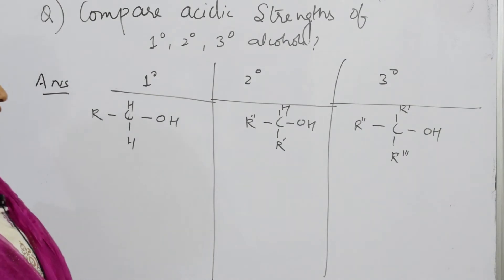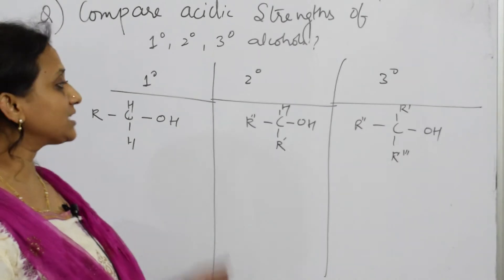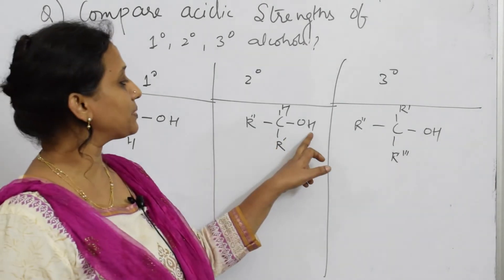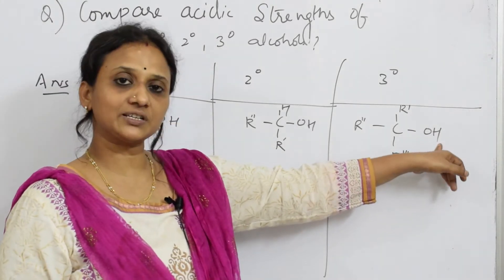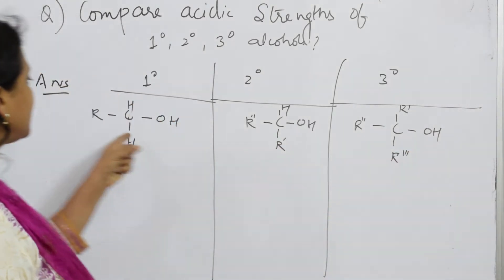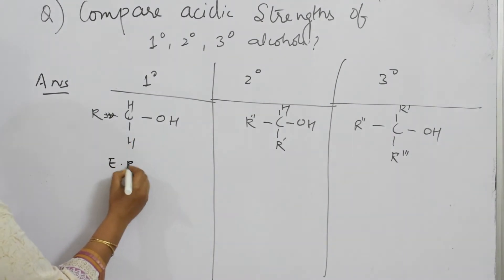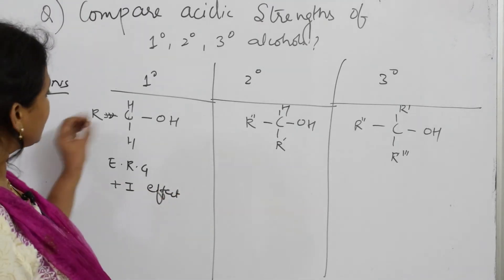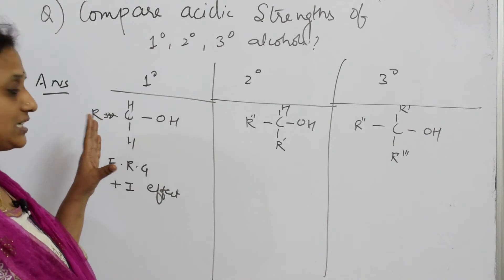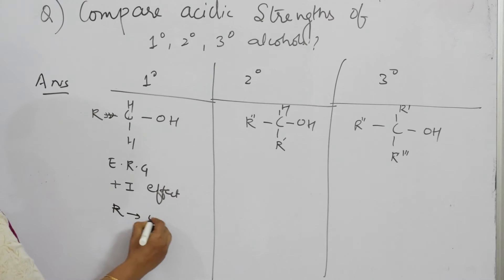Now, what do they say, when some question is raised on acidic strength, that means this particular compound has to release H+ ion which is adjacent to oxygen atom. So release of H+ ion makes it more acidic. Let us see the first case, here you have only one electron releasing group, that means +I effect. So +I effect, +I inductive effect, there is only one alkyl group which is releasing. In this case, you have alkyl group only one.